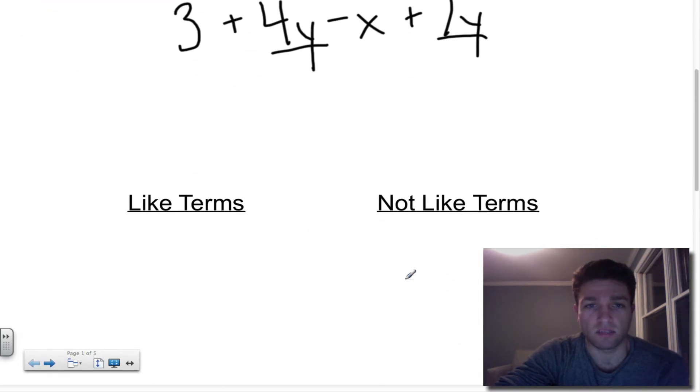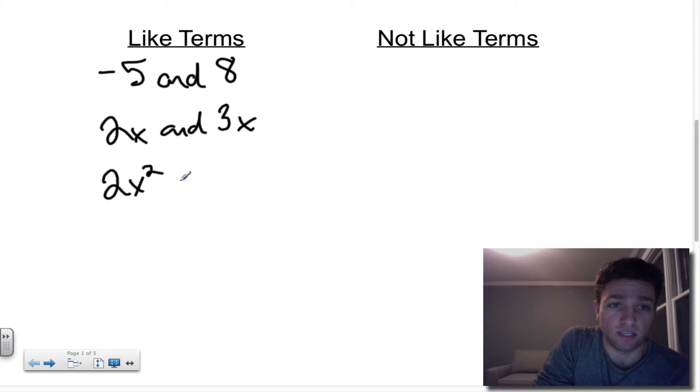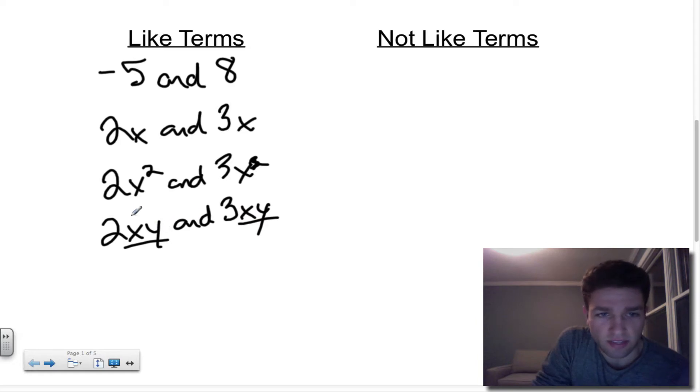Let's look at just a few examples of things that are like terms and things that are not like terms. Some examples of like terms would be something like negative 5 and 8. These two things are like, they're both numbers, and they can be combined to simplify. We also could see something like 2x and 3x. These both have the same variable factor, and that's x, and those can be combined to simplify as well. We could also have something that looks like 2x² and 3x². Those both are like terms because they have the same exponent on that variable, and they're the same variable factor. And then another example would be something like 2xy and 3xy. You're basically looking for things that match with the variable factors.